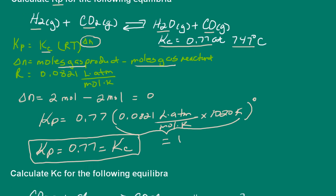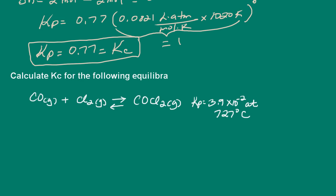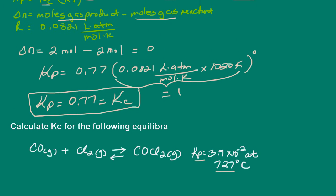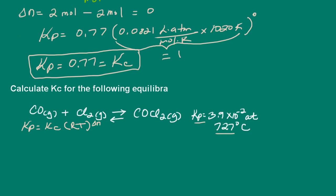So let's take a look at this next problem here. And now we're asked to calculate Kc for the following equilibria. So we're given Kp. And this is at 727 degrees Celsius. So what we'll do is use the above equation, and we'll just rearrange it. So we had Kp is equal to Kc times Rt to the delta N power.